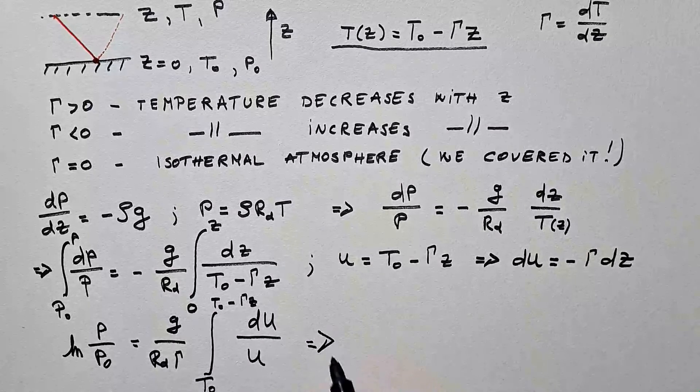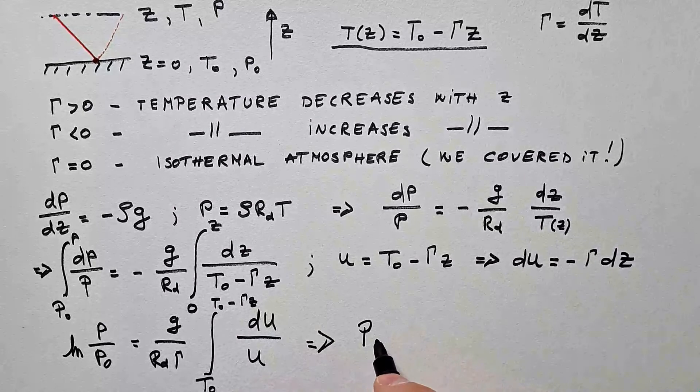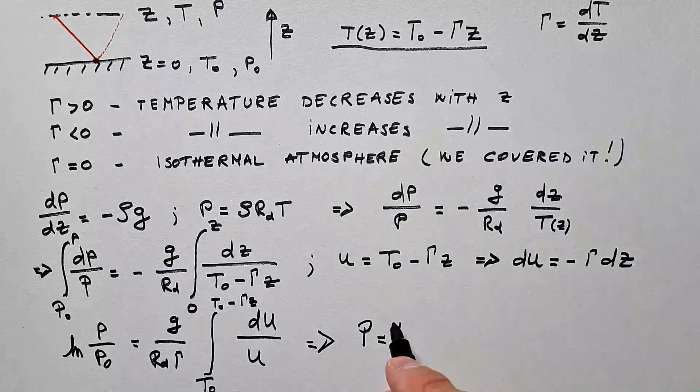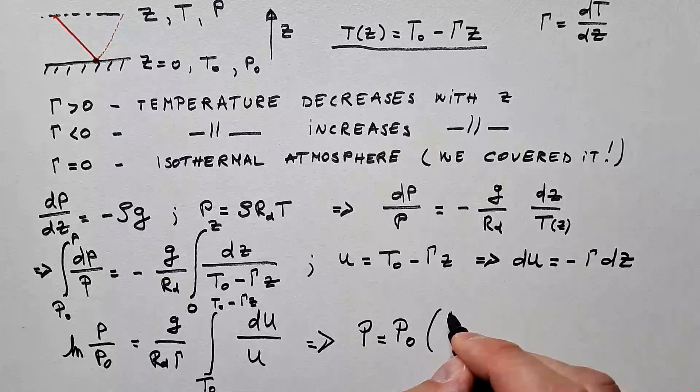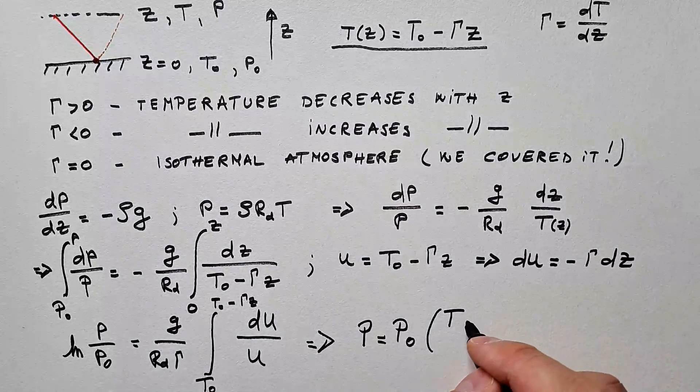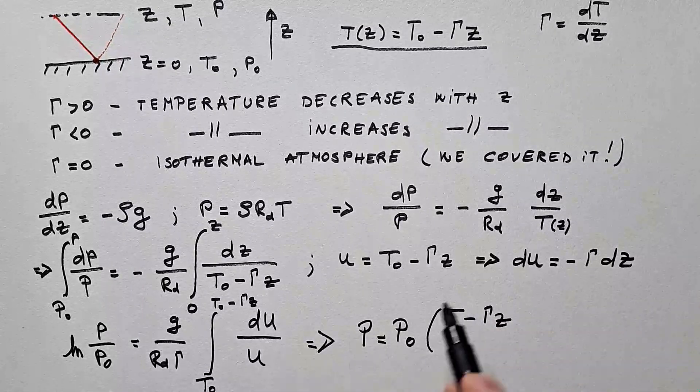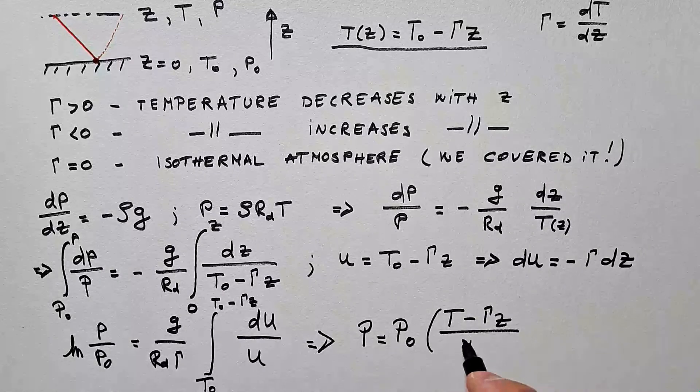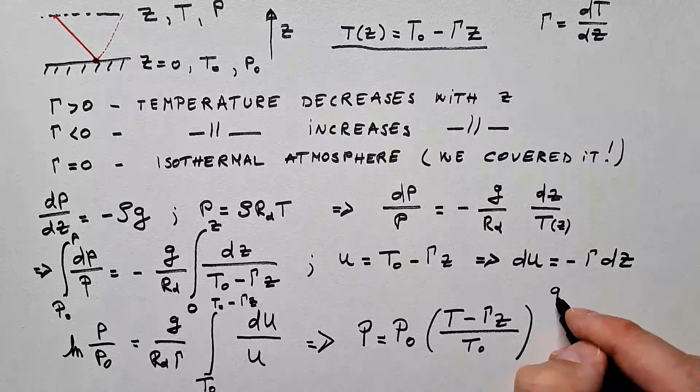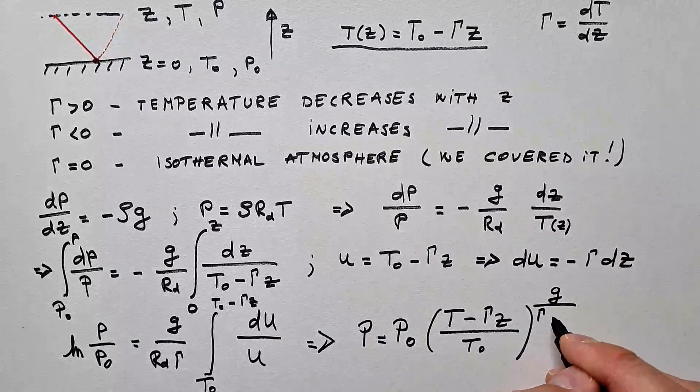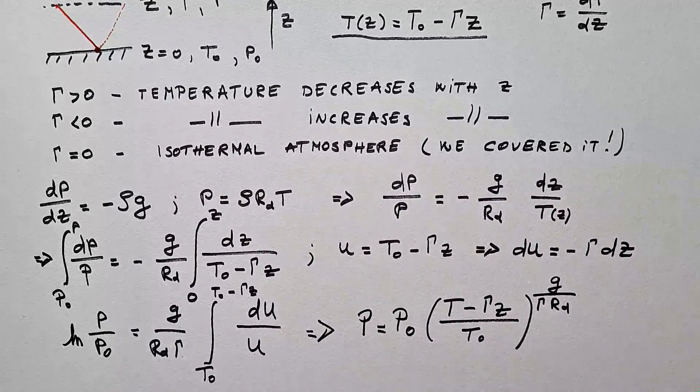And now, I simply solve this integral without any further ado, and I get that, because this is a logarithm, that P is equal P₀ times T₀ minus γz over T₀, and all that to the power g over γRd.